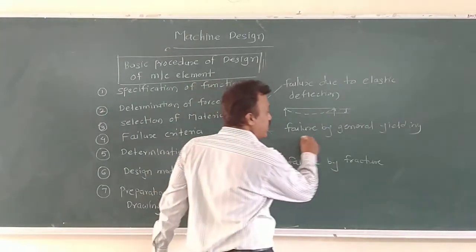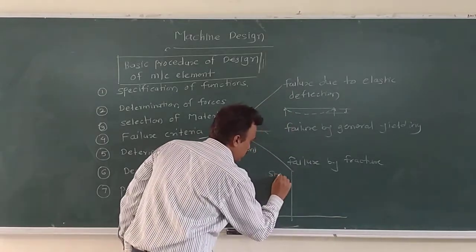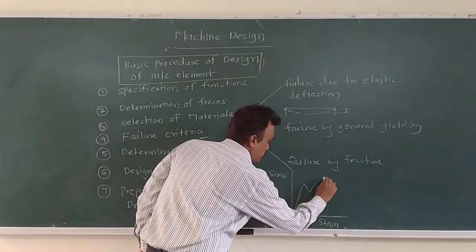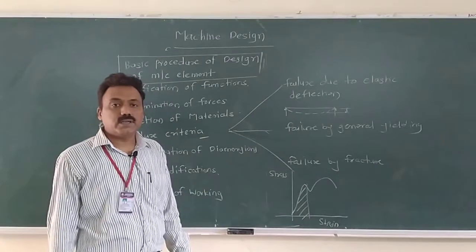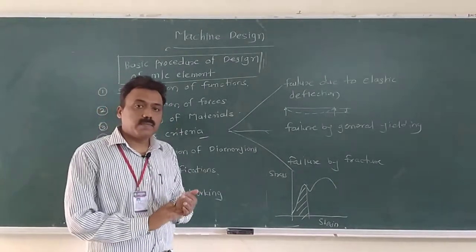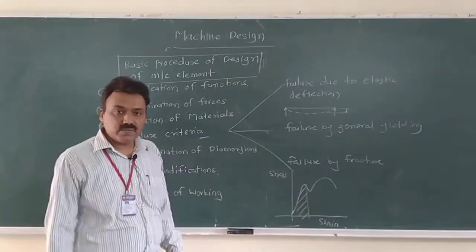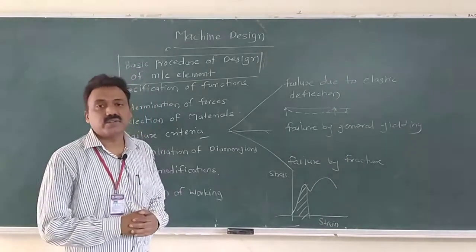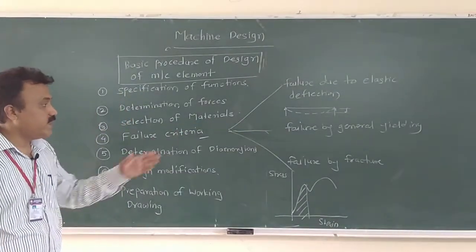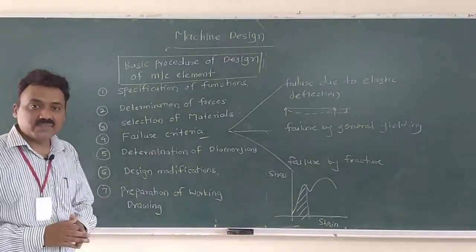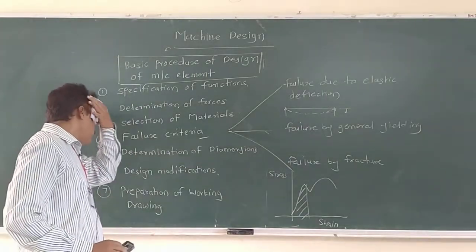Next is failure by general yielding. From the stress-strain diagram, as per Hooke's law, stress is proportional to strain within the elastic region. If the load is removed, the body regains its original position. But if the load goes beyond the elastic limit, it enters the plastic stage and the body cannot regain its original position — that becomes failure by general yielding. This is most common for ductile materials. Failure by fracture is sudden and typically occurs in brittle materials. These are the three modes of failure.